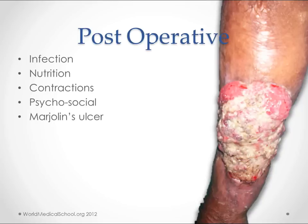Post-operative complications include infection. You also need to worry about nutrition in these patients. The psychosocial issue is a big one — a lot of people come away from burns very disfigured, and that may be the hardest challenge in their life afterwards. Marjolin's ulcer, as pictured here on the right, is a skin cancer that can result from the scarring after burns — something to keep an eye out for, because it can be pretty dangerous.